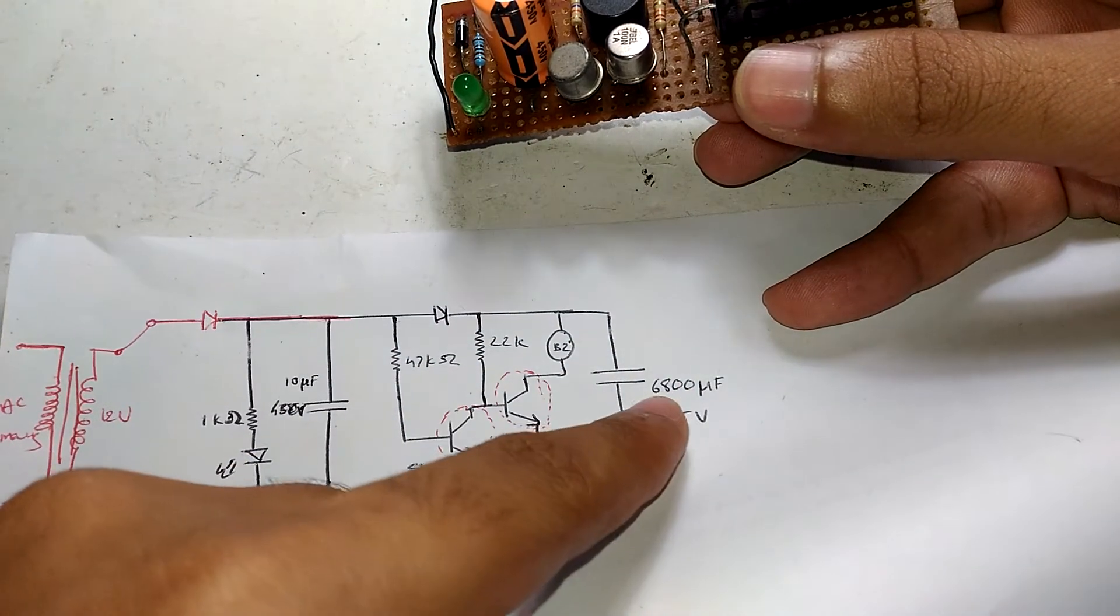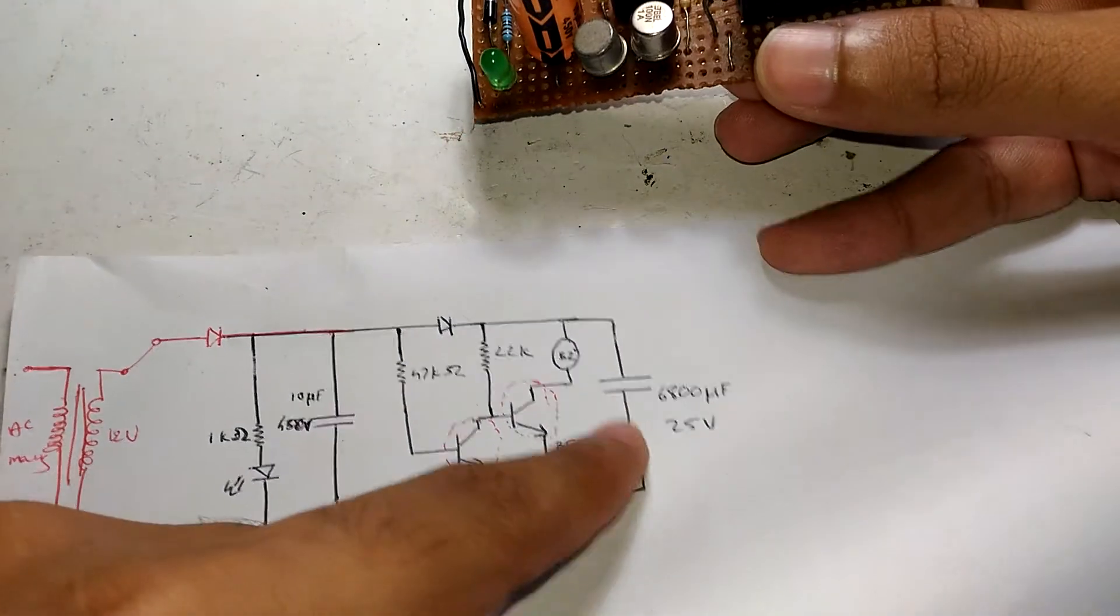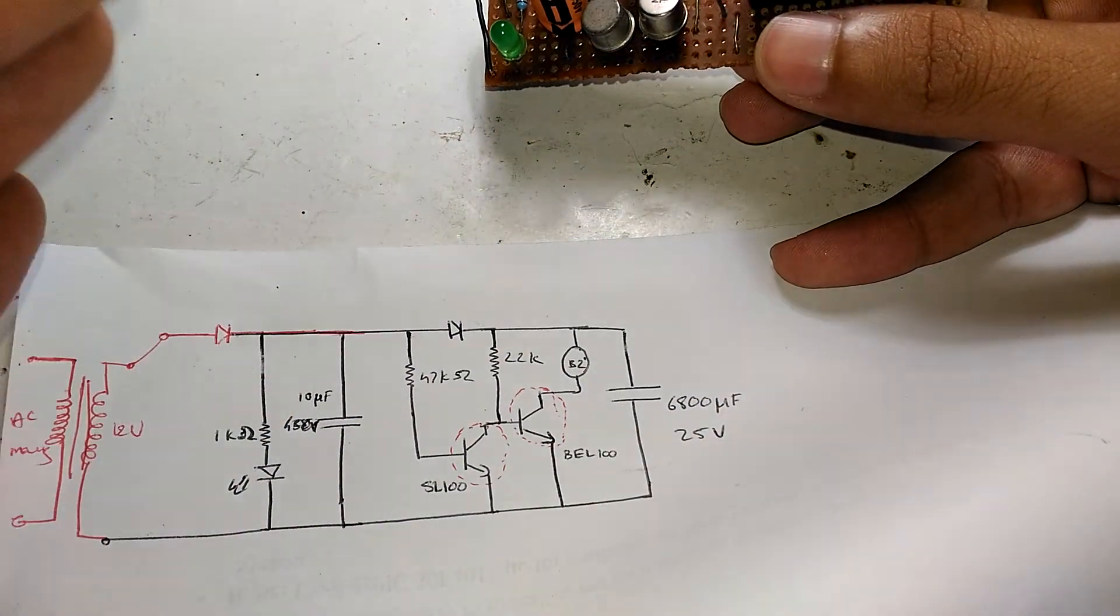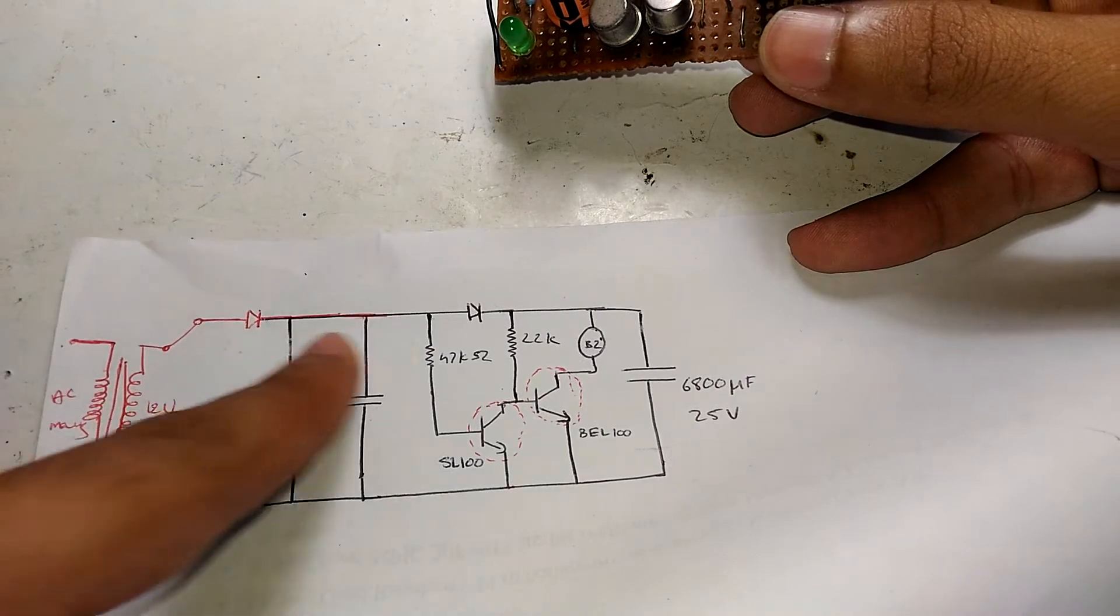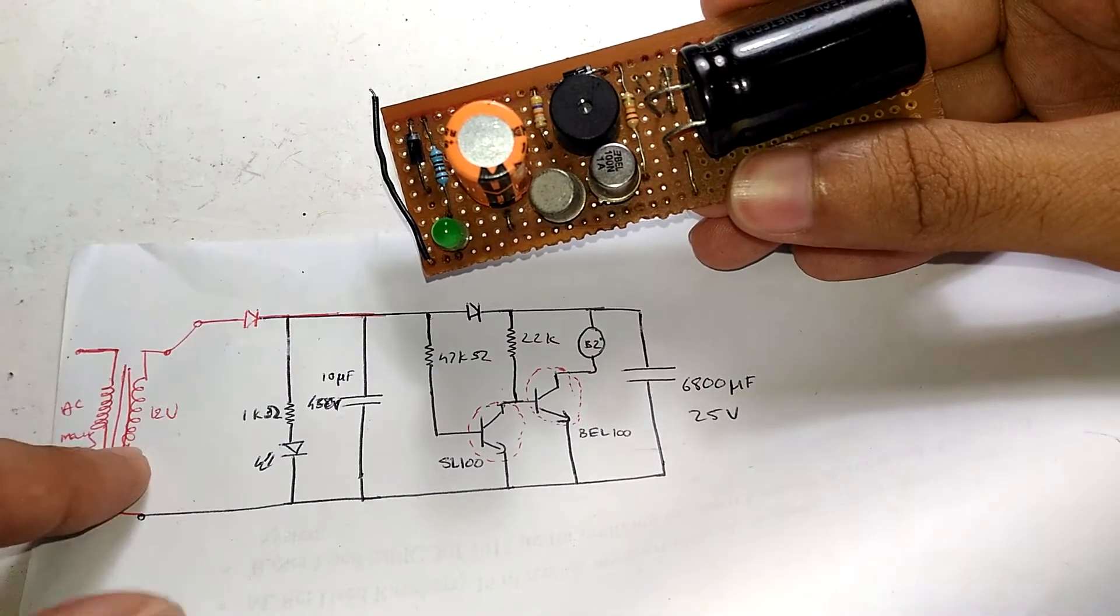When this is turned off, the buzzer won't get any current flow and will be off. But still, because AC input is available, it can charge this capacitor to its maximum value.